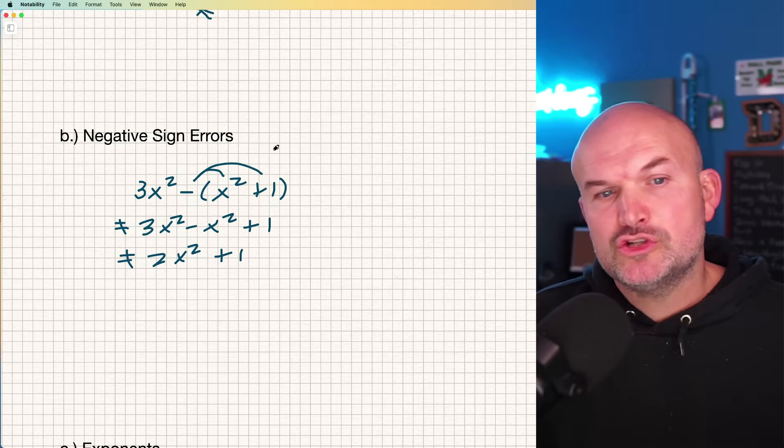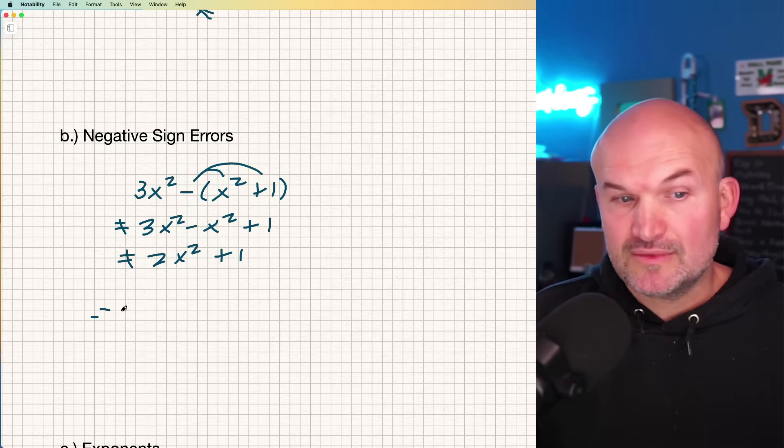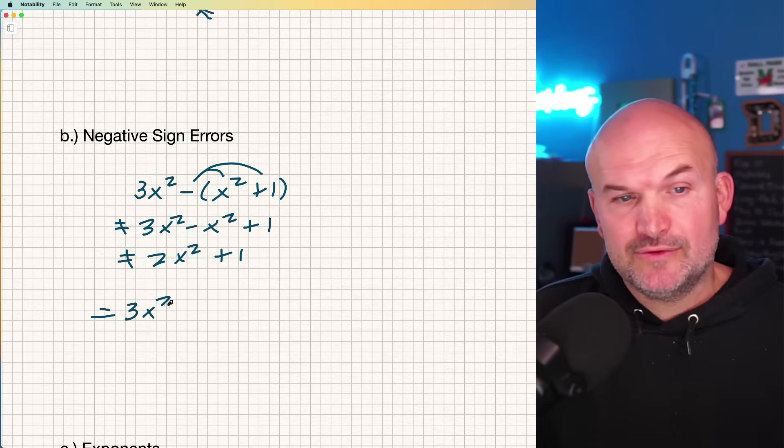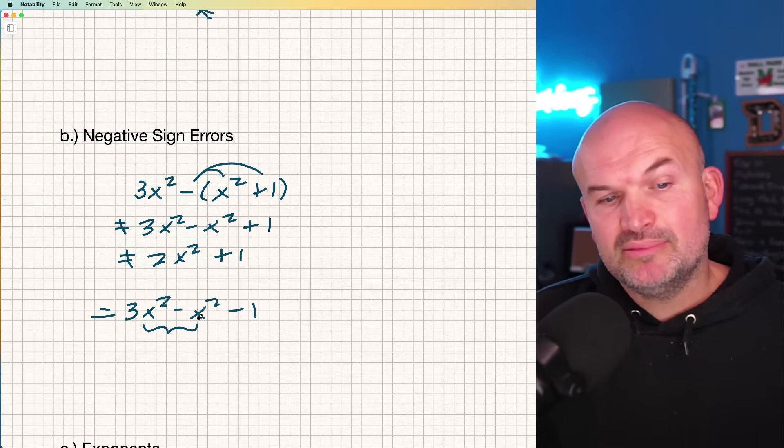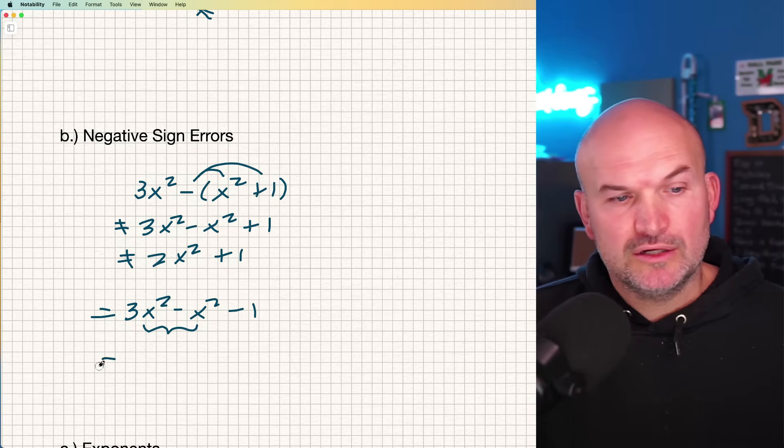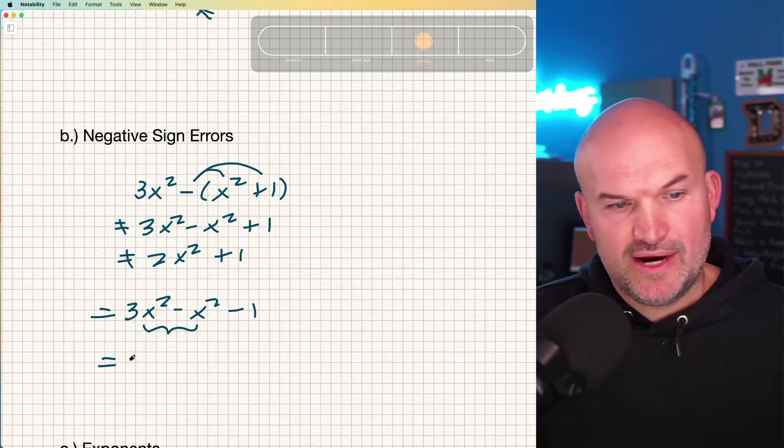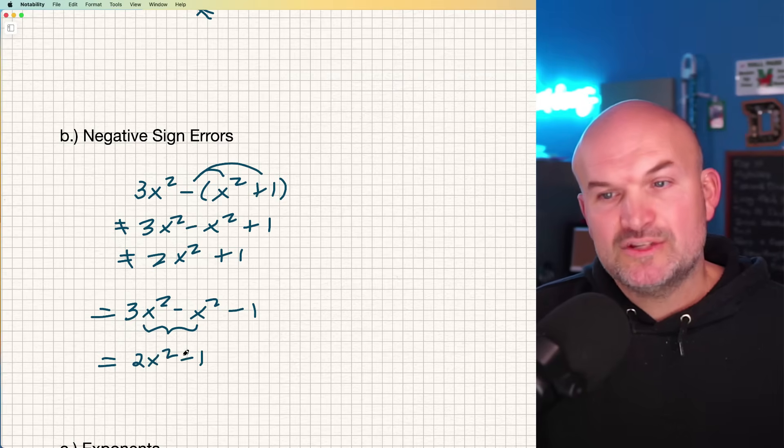That's why we have the parentheses for x² plus one. So we need to make sure you distribute that negative one to both terms. Therefore, it equals 3x² minus x² minus one. Now we can apply the subtraction to our quadratic terms, and I get 2x² minus one.